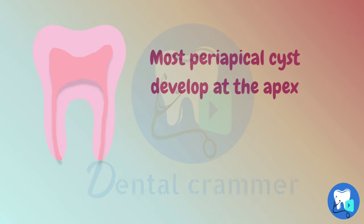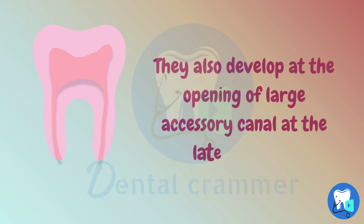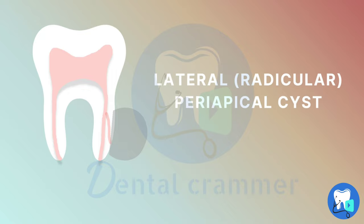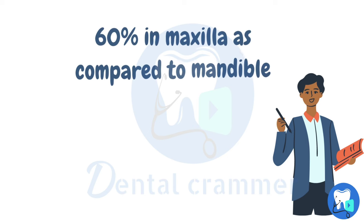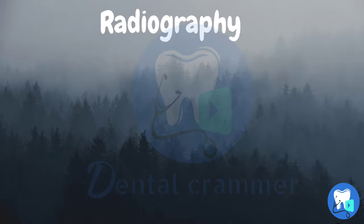Most periapical cysts develop at the apex of the tooth adjacent to the pulp canal opening. However, sometimes they also develop at the opening of large accessory canal at the lateral aspect. Such cysts which develop at the lateral aspect are known as lateral periapical cysts. 60% of the periapical cysts are present in maxilla as compared to mandible, with the most common tooth being the maxillary lateral incisor.